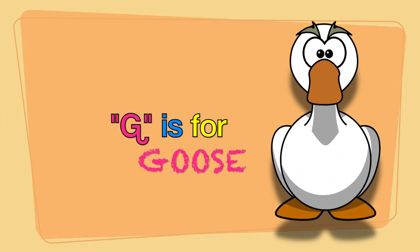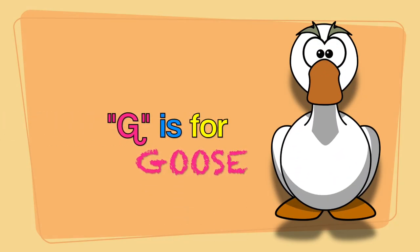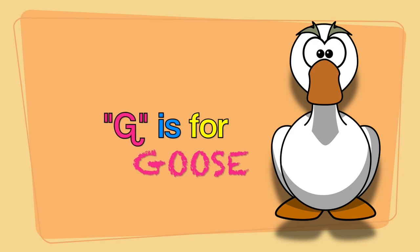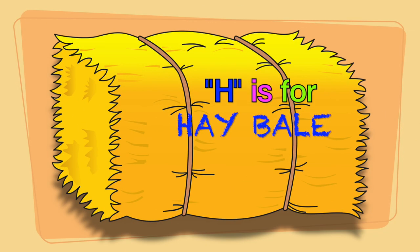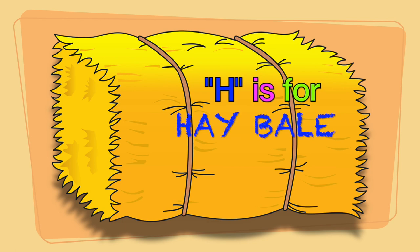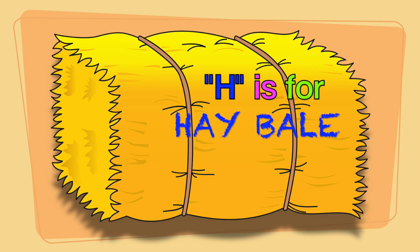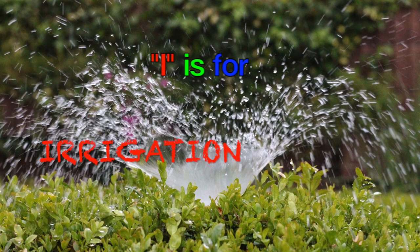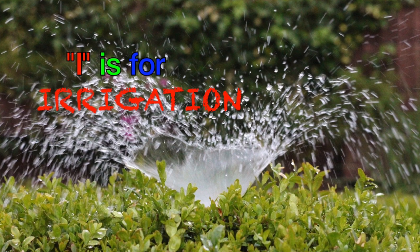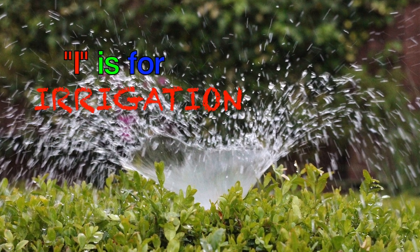G is for goose. H is for hay bale. I is for irrigation.